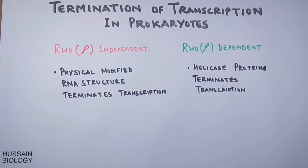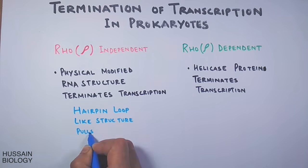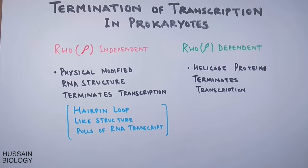In rho-independent termination, the hairpin loop-like structure pulls off the RNA transcript from the RNA polymerase complex, thereby terminating the transcription. As you can see in this diagram, the hairpin loop-like structure comes into action.